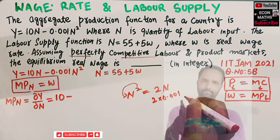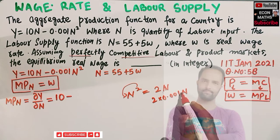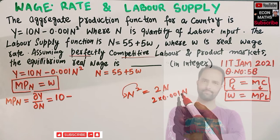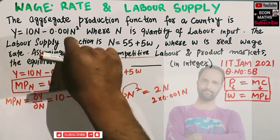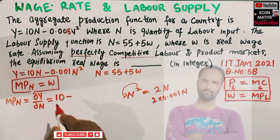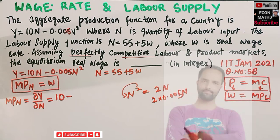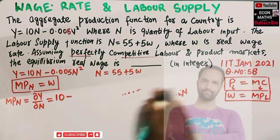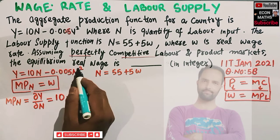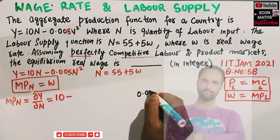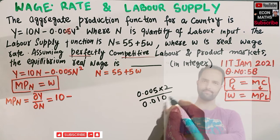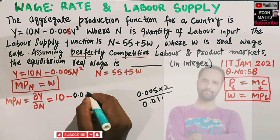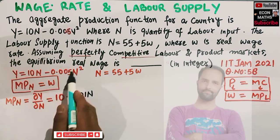We also have the coefficient 0.005, so 2 × 0.005 = 0.01. Therefore, the marginal product of labor MPL = 10 - 0.01n. This is the result of taking the derivative of the production function with respect to labor to get the marginal product of labor.